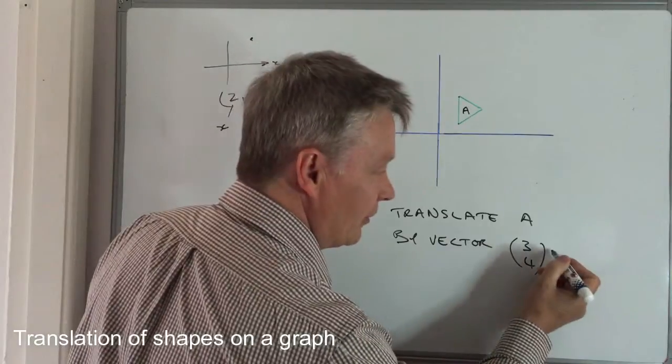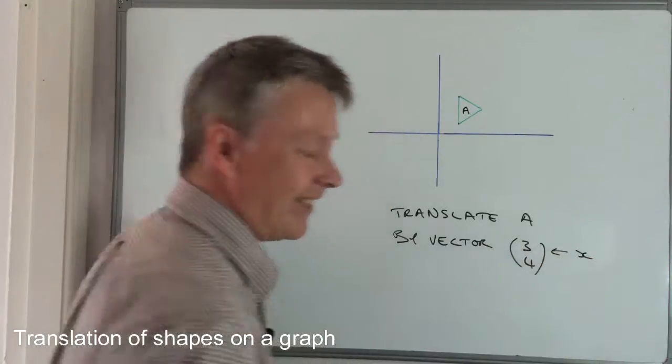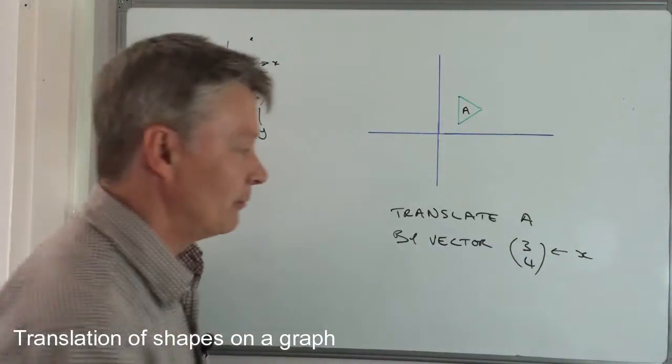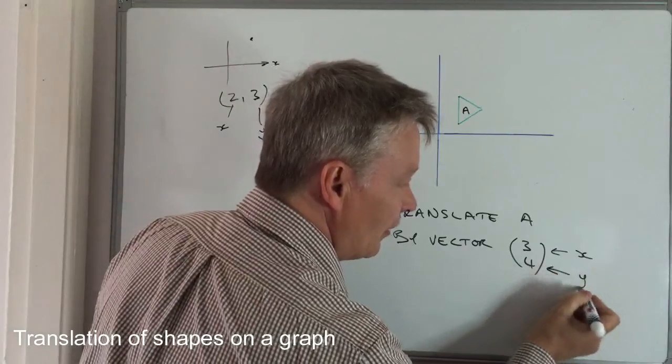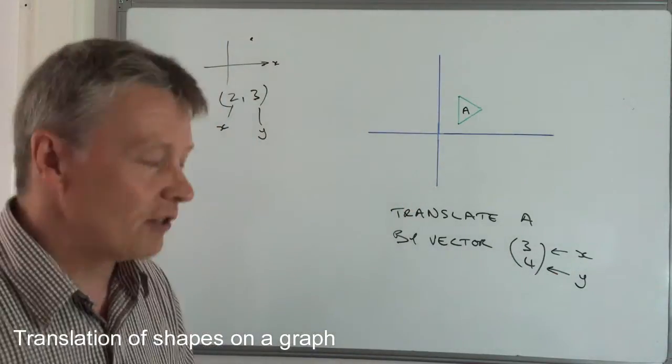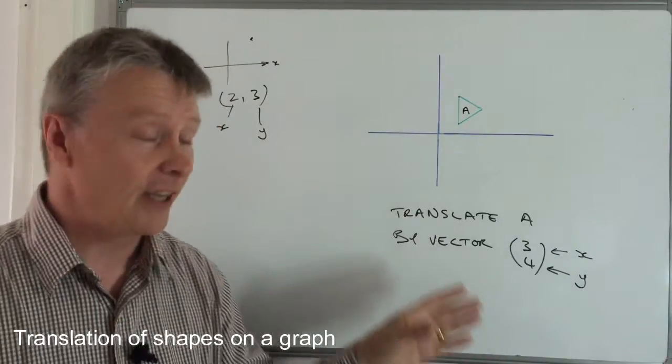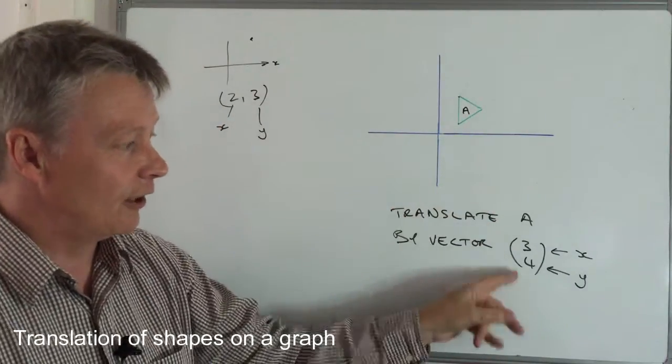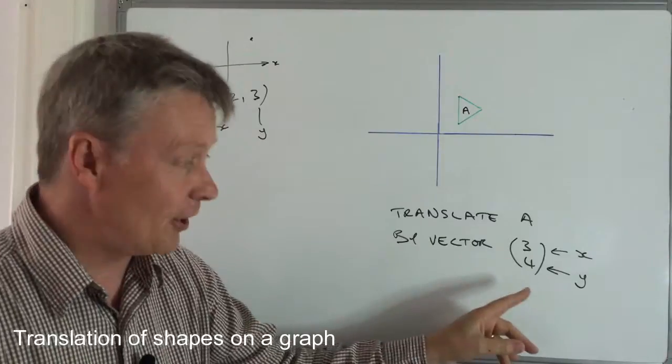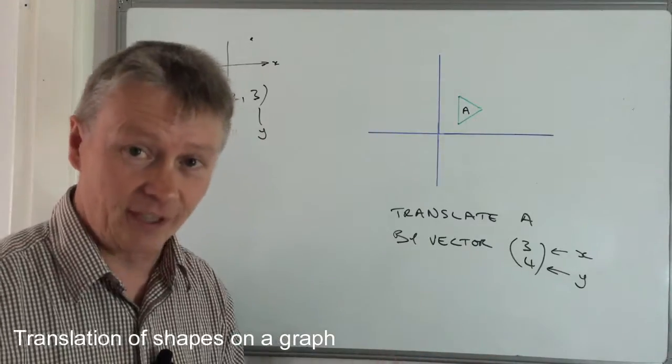But the principle is exactly the same, in that the first number that you get refers to the x-axis, and the second number you get refers to the y-axis. So really, all they're asking us to do is to take this shape and move it on the grid, along 3, and up 4, in this particular case.